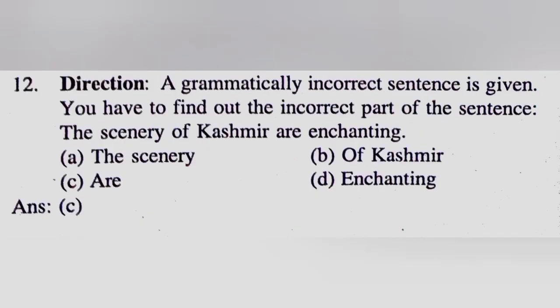Next question: a grammatically incorrect sentence is given. You have to find out the incorrect part of the sentence. The scenery of Kashmir are enchanting. Option A: The scenery. Option B: of Kashmir. Option C: are. And option D: enchanting. So your correct answer is option C, are.